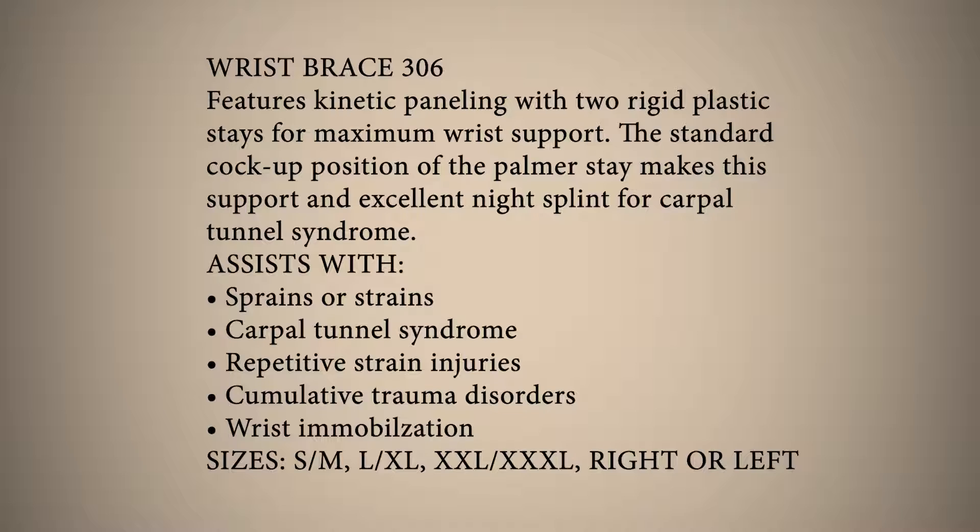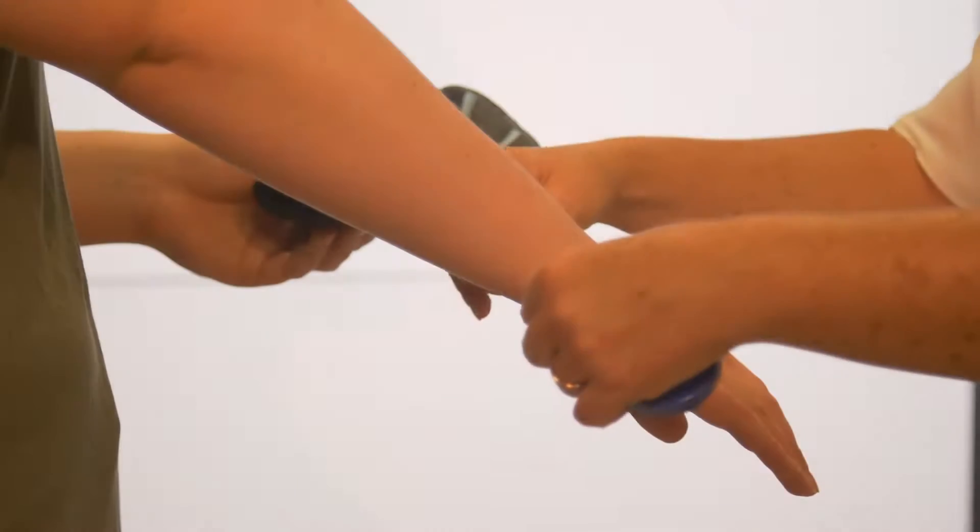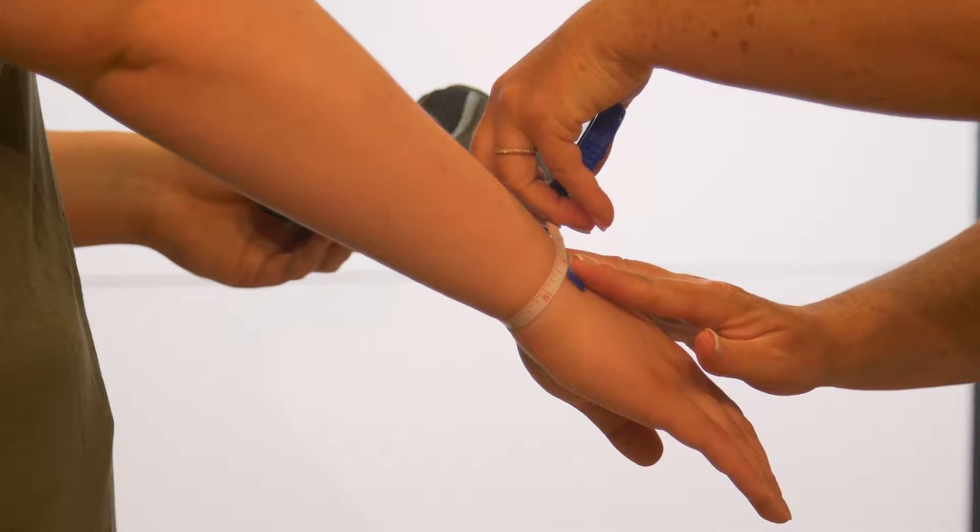The 306 wrist brace is available in three different sizes and is right or left specific. To determine the required size, take a measurement around the largest part of the wrist.